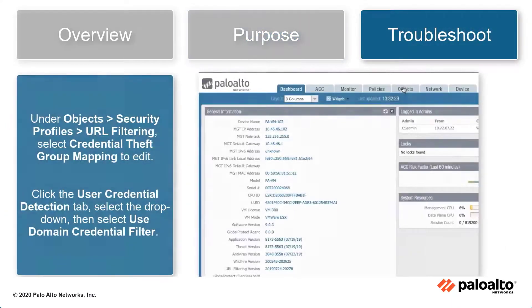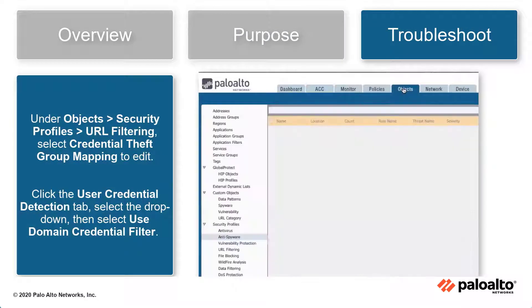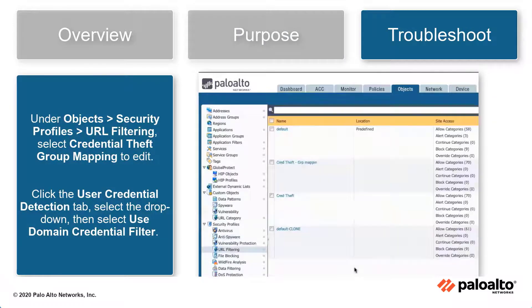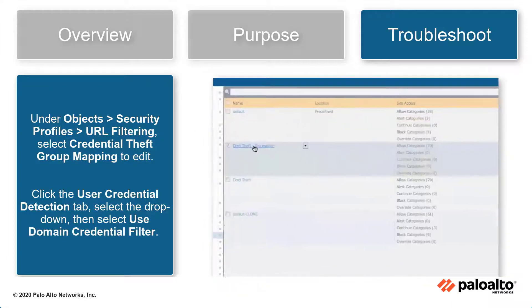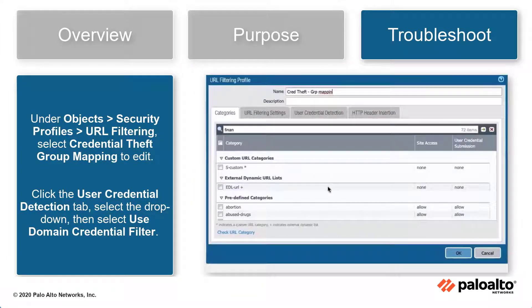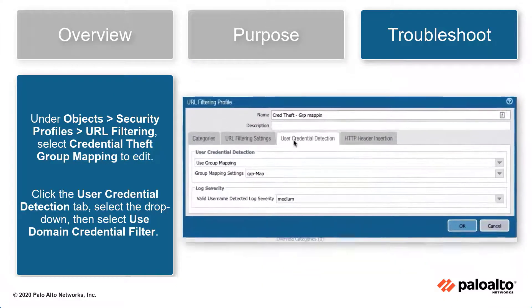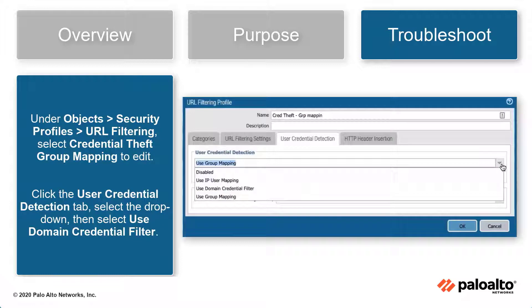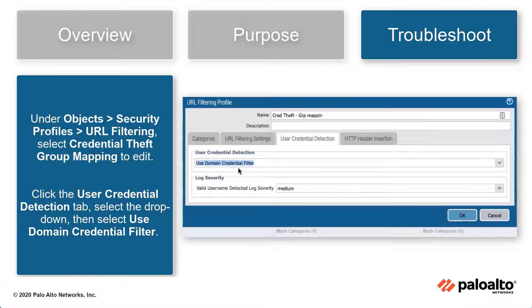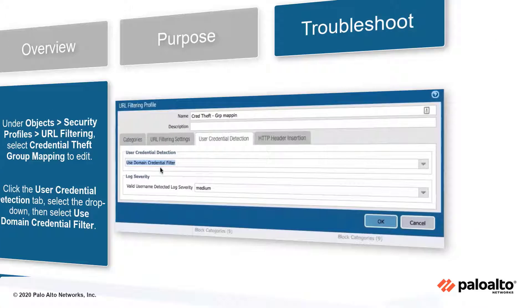Under Objects, Security Profiles, URL Filtering, select Credential Theft Group Mapping to edit. Click the User Credential Detection tab, select the drop-down, then select the Use Domain Credentials filter. This will ensure the Best Practice Check passes.